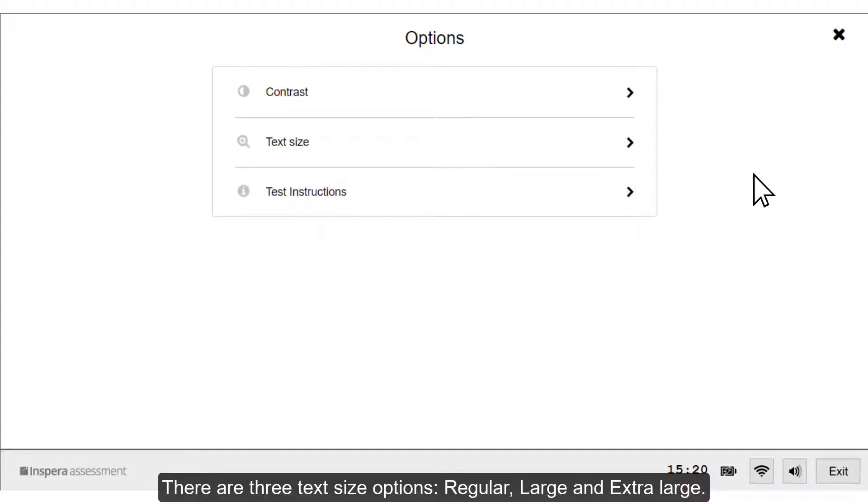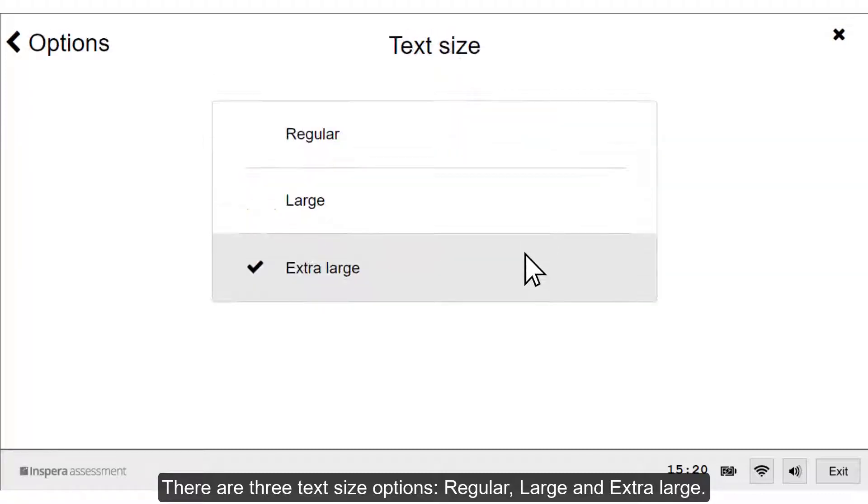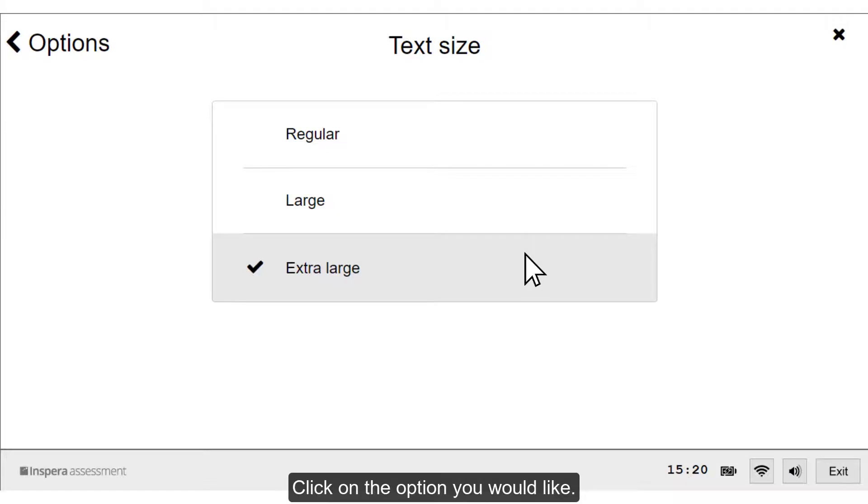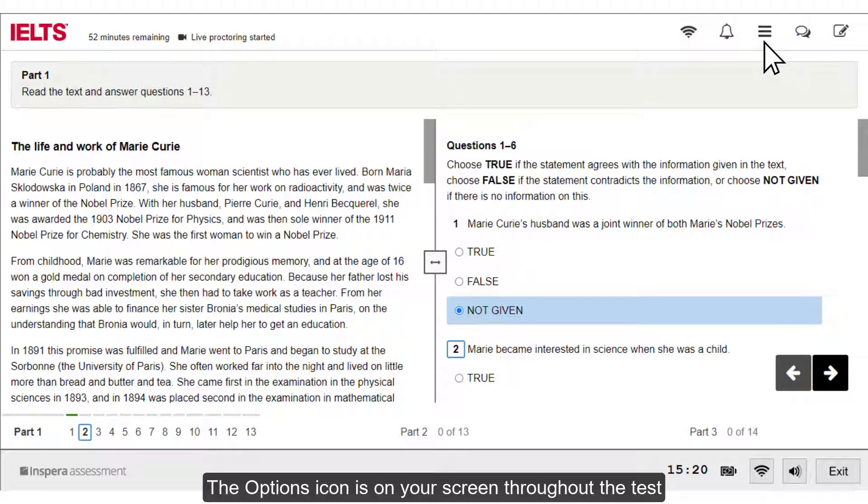There are three text size options: regular, large, and extra large. Click on the option you would like. The options icon is on your screen throughout the test, so you can change the settings at any point during the test.